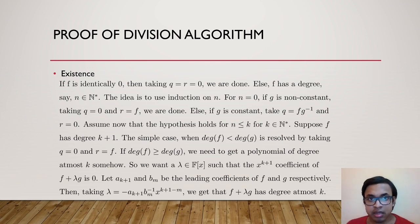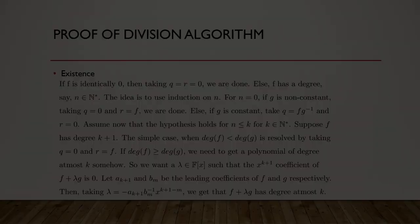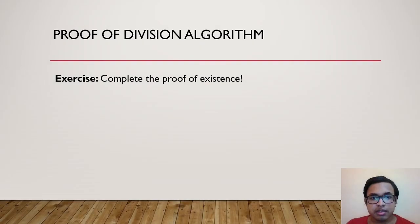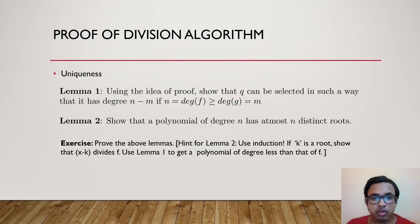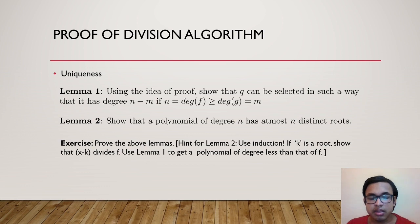It is a good exercise to complete the proof of existence by applying the induction hypothesis. Now let us come to the uniqueness of the quotient and remainder. We need a few lemmas. Lemma 1: using the proof idea, q can be selected so that it has degree n−m, where n is the degree of f and m is the degree of g with n ≥ m.